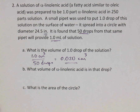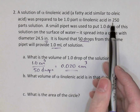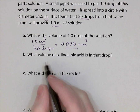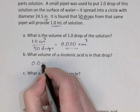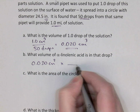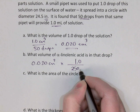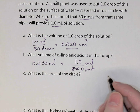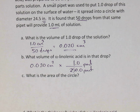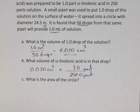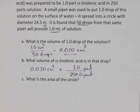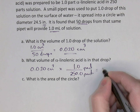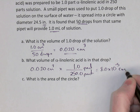That solution is not pure linolenic acid — it was only one mil in 250 mils, one part in 250 parts. So we take the volume of a drop, 0.020 cubic centimeters, and multiply by one out of 250. It could be one mil in 250 mils or one liter in 250 liters — it's using the generic term 'one part in 250 parts.' So 0.02 divided by 250 gives us 8.0 × 10⁻⁵ cubic centimeters, the volume of the linolenic acid in that one drop.